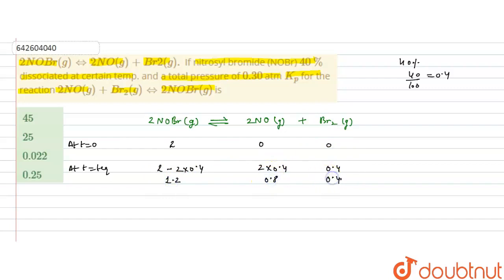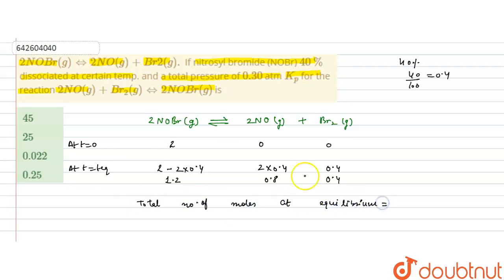The total number of moles at equilibrium is 1.2 + 0.8 + 0.4 = 2.4 moles.